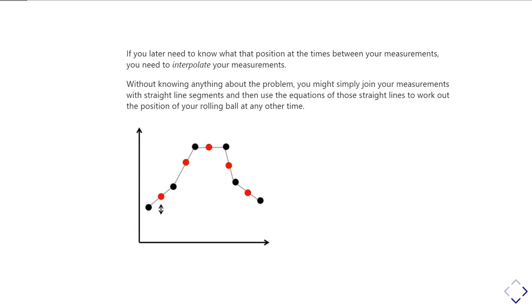Without having any particular insight to the problem and knowing anything exactly about what's going on, really the only thing you can sensibly do is join the dots with straight lines. In this example I'm showing on the screen here, the black points are the ones we measured, and the red points are the ones we'd like to estimate where they are. You can just draw a straight line between the black points and then work out where on that line the red points should fall. That is interpolating your data, and specifically, it's linearly interpolating your data.